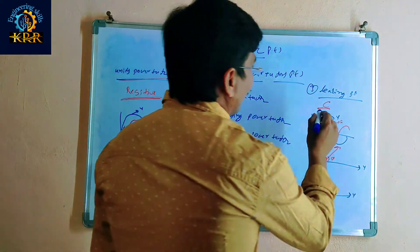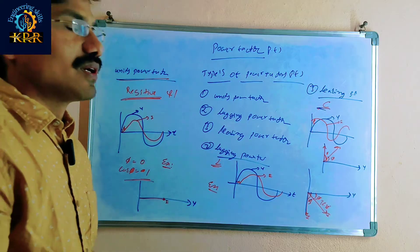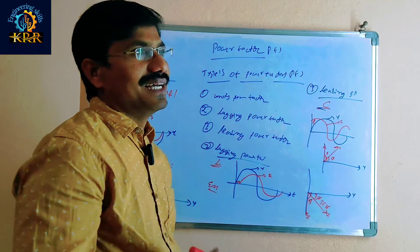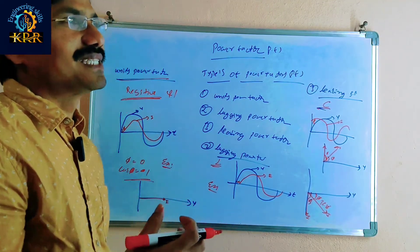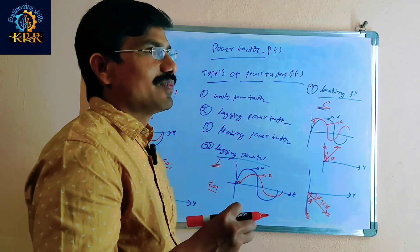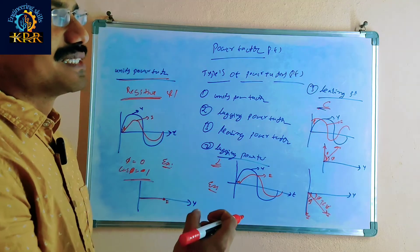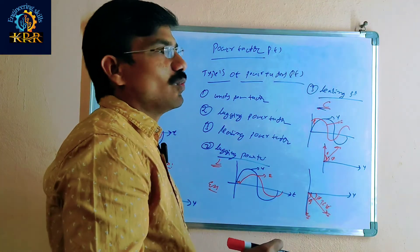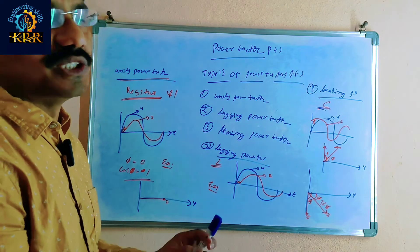As an example for the leading power factor — capacitive loads are not naturally available in large quantities; most capacitor loads are very few. That is the reason we externally install capacitor banks. Capacitor banks and synchronous condensers all come under leading power factor or capacitive loads. Since these loads are less, we compensate by adding capacitor banks to the existing system to achieve equalizing.